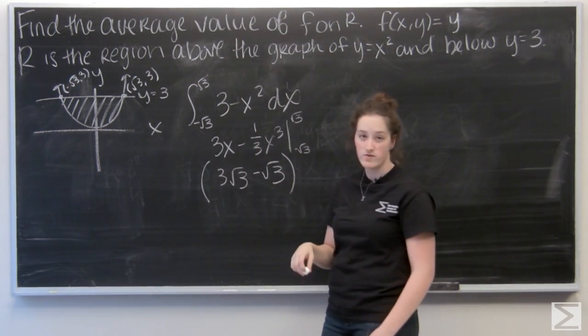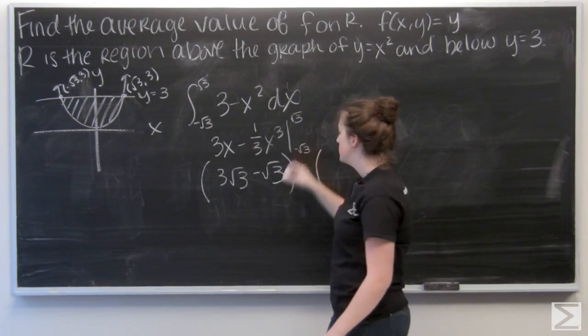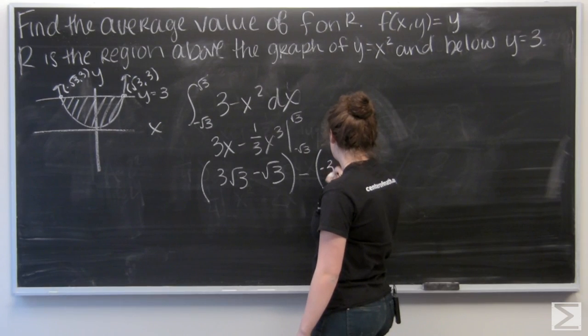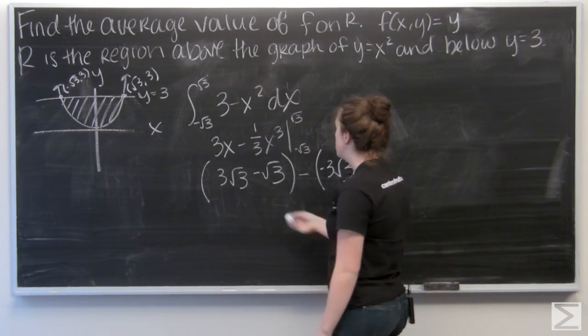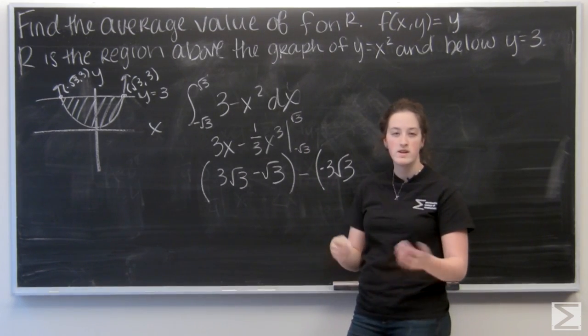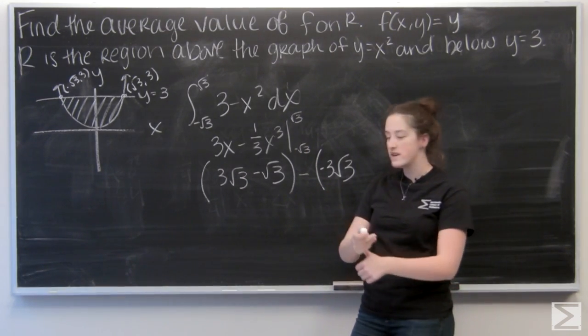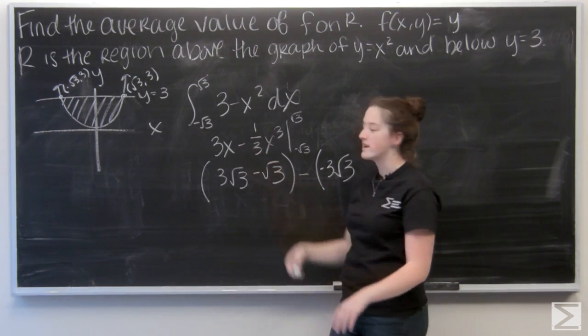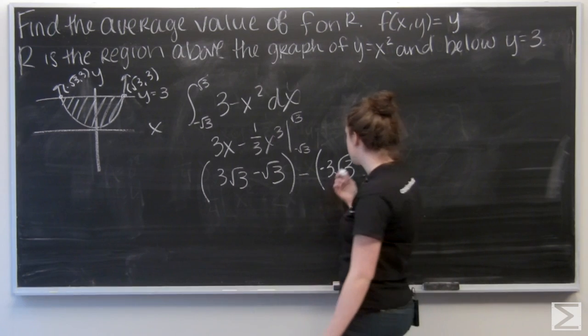Now I want to plug in negative root 3. I'm going to subtract this. So negative root 3 times 3, negative 3 root 3. And then the same thing for x cubed. But this time since it's a negative, I have to worry about the sign. So I have negative times a negative makes a positive, times a negative and another negative. So I'm going to be adding, which is kind of confusing.